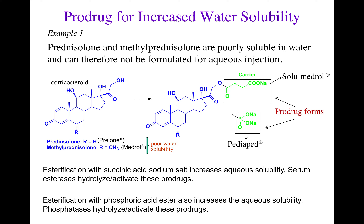Example number one is a prodrug for increased water solubility. Prednisolone and methylprednisolone are poorly soluble in water and therefore cannot be formulated into an aqueous injection, such as an IV injection. Both of these drugs are marketed as Prelone and Medrol, but they are marketed as oral dosage forms and can't be made into IV aqueous injections because of their poor water solubility.